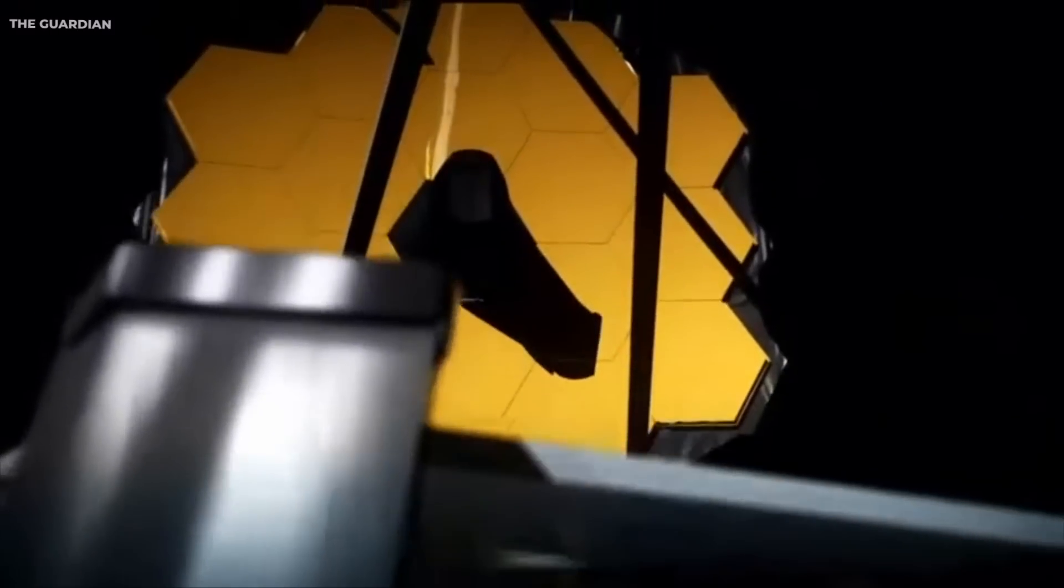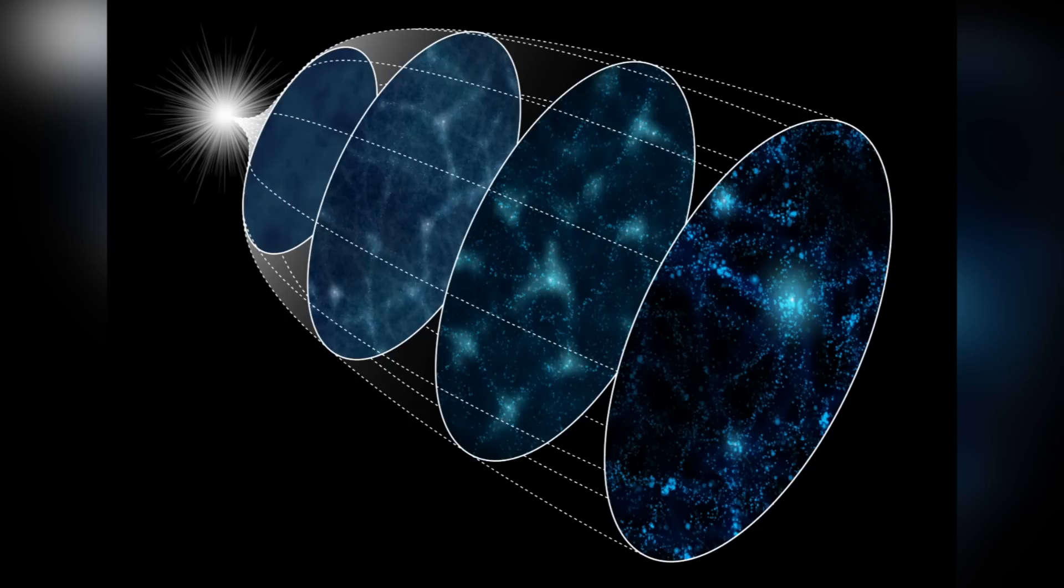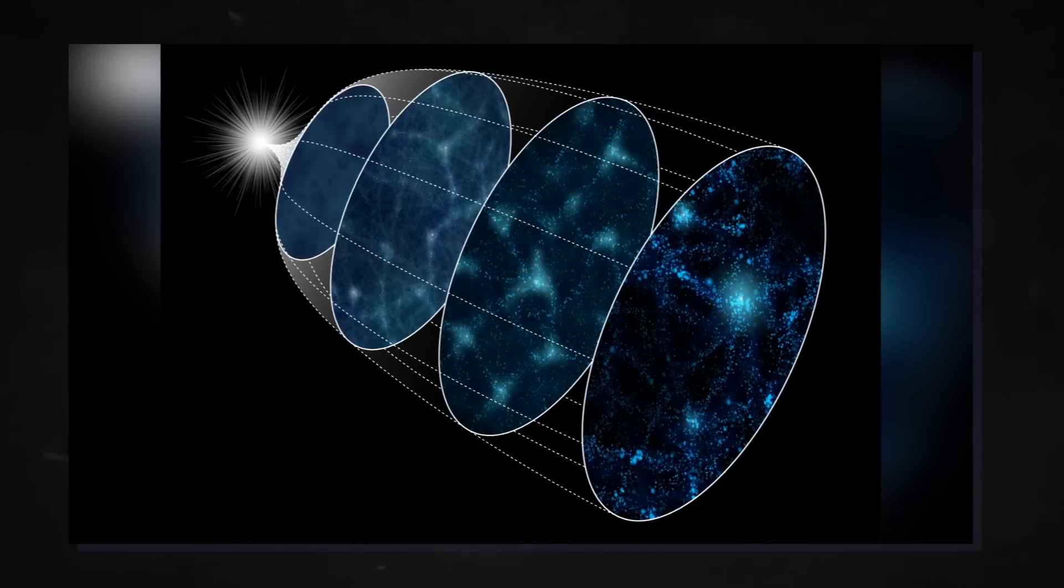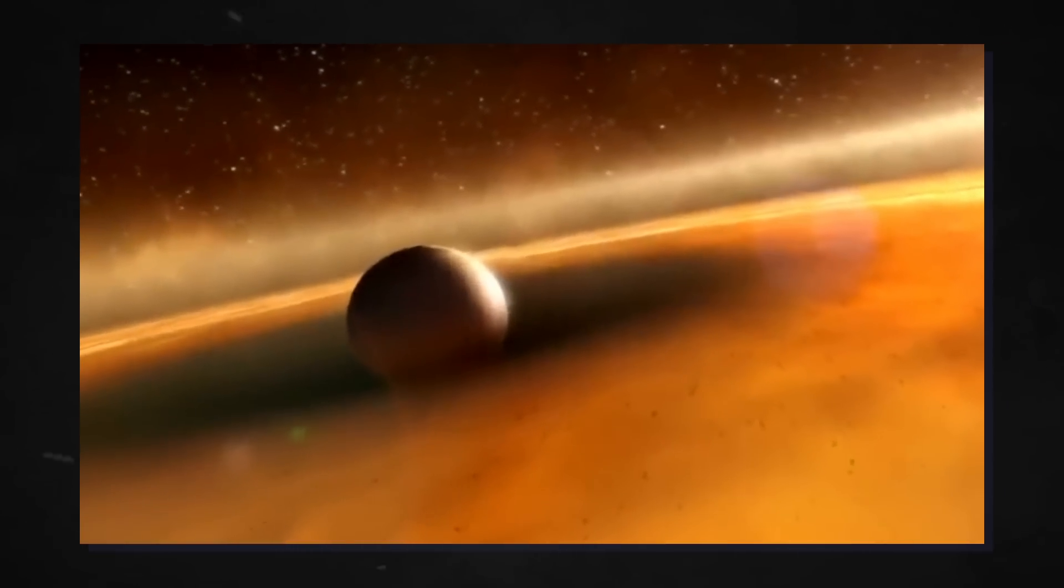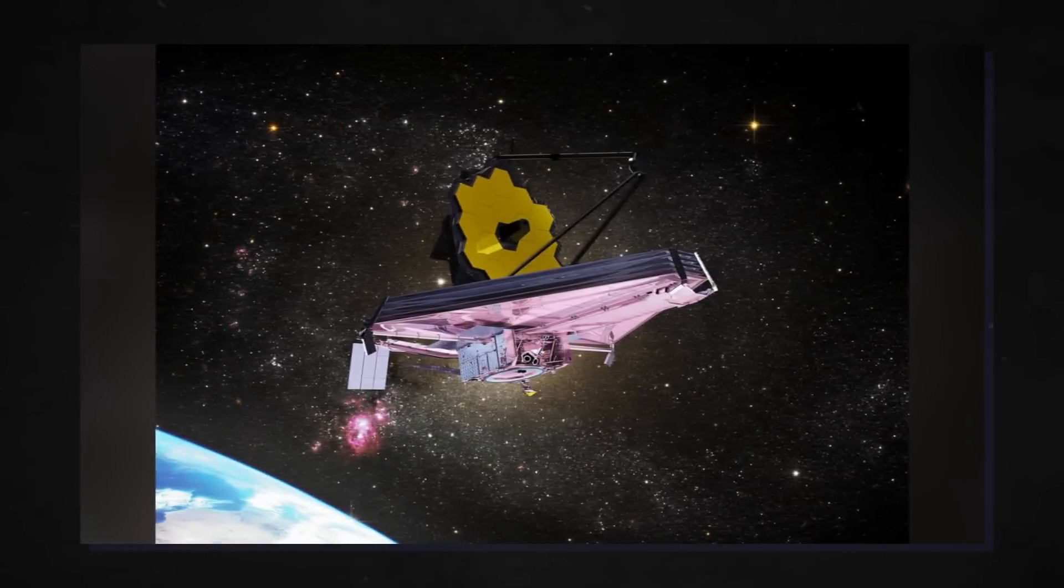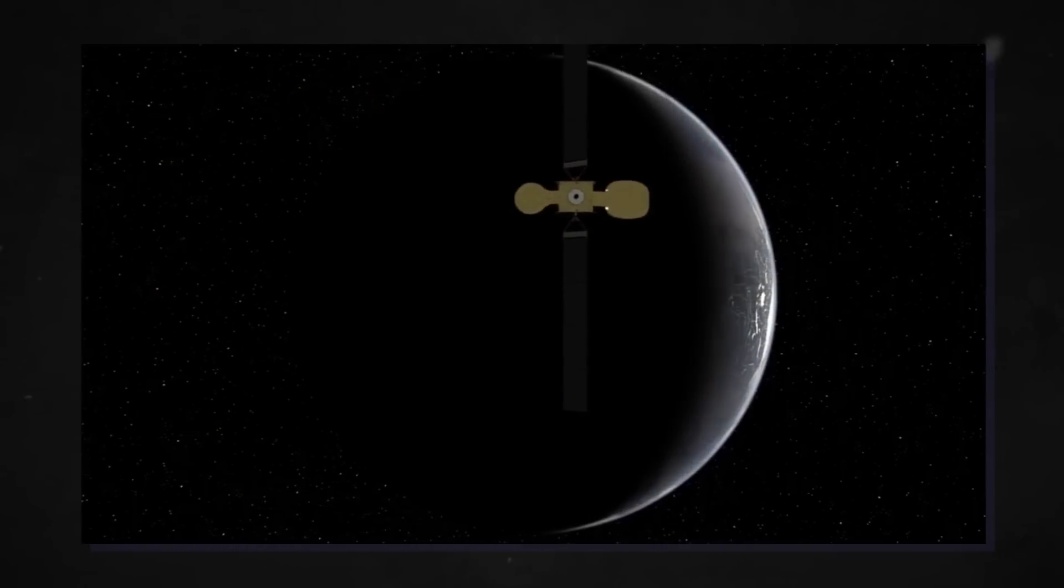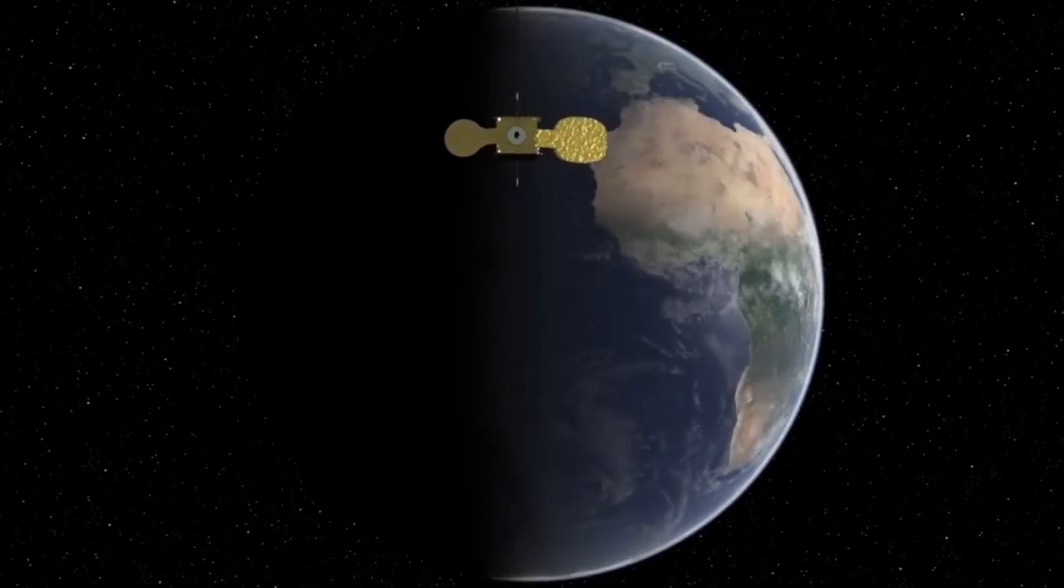The James Webb Telescope's discoveries have the potential to challenge what we know from the Big Bang Theory and provide new insights, raising intriguing questions. If the telescope detects evidence of structures or patterns that deviate from the expected distribution from the Big Bang Theory, it could open up new possibilities and alternative explanations for the origins of the universe. The further evidence of the deliberate and delicate fine-tuning of the universe provided by the James Webb Telescope only fuels the thought of a divine presence overlooking the affairs of the universe.